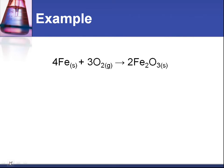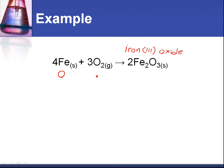Let's look at an example. We have Fe plus O2 giving Fe2O3. Fe2O3 is also called iron(III) oxide. The three here in Roman numerals tells you the oxidation state of the iron. Now, Fe is an element and O2 as a gas is an element too, so the oxidation states here are both zero.